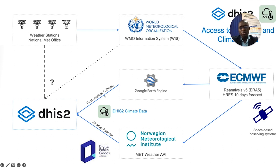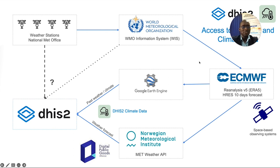The DHIS2 Climate Data Application integrates data from a source called ERA5 through the Google Earth Engine, and also from the Norwegian Meteorological Institute through their web API. These two sources provide data that is then integrated into DHIS2. The data comes through weather stations that report to the World Meteorological Organization, which provides data to the ECMWF that does re-analysis and makes it available through Google Earth Engine.